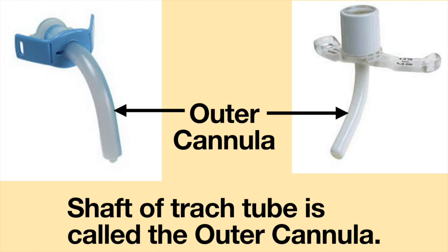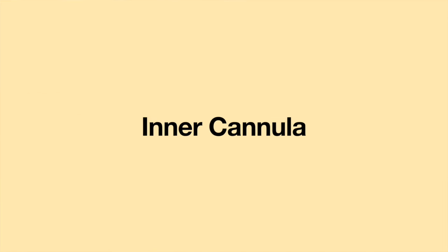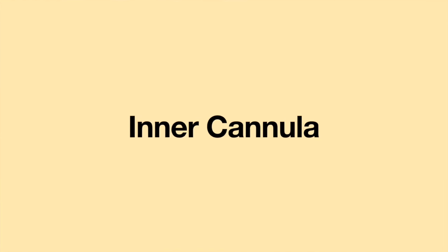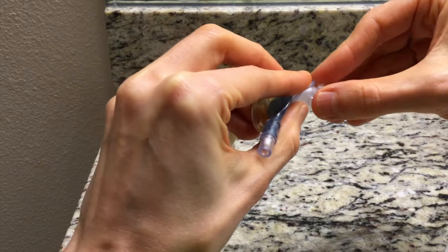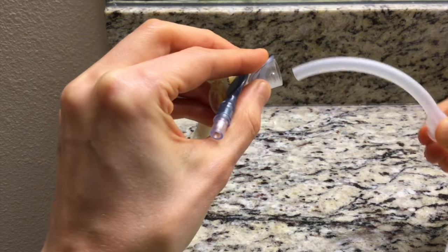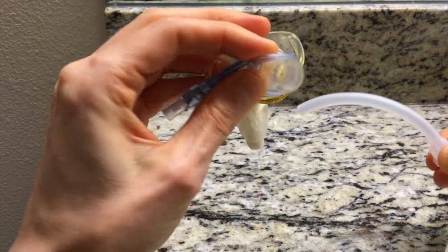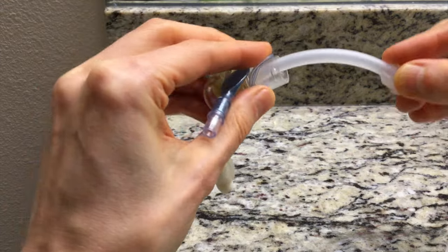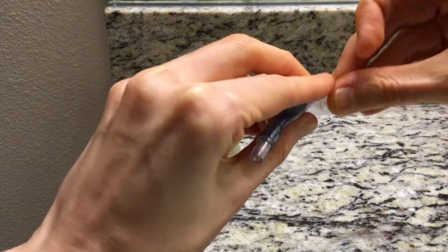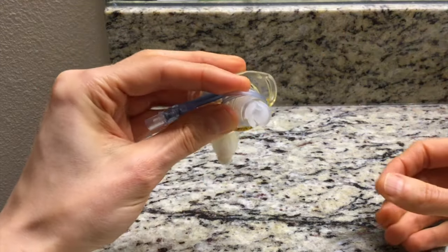The shaft of the tracheostomy tube is called the outer cannula. Some tracheostomy tubes have a removable insert which is called the inner cannula. The inner cannula fits into the outer cannula.